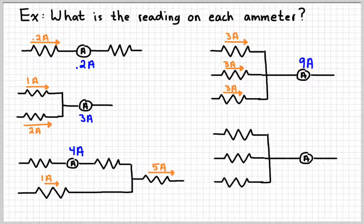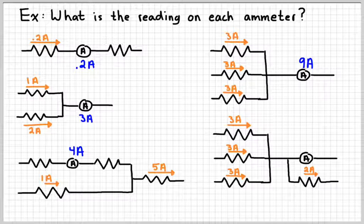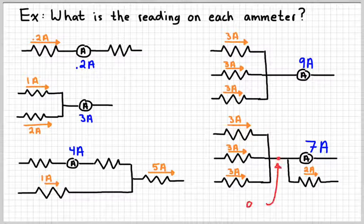Let's suppose we took a very similar circuit but added a branch before we got to the ammeter, and we measured two amperes of current going through that bottom resistor. The reading on the ammeter would now be seven. Originally there were nine amperes of current — two are missing because they had another junction they could leave through, and so seven are left over. Before that junction, there's still nine amperes of current.